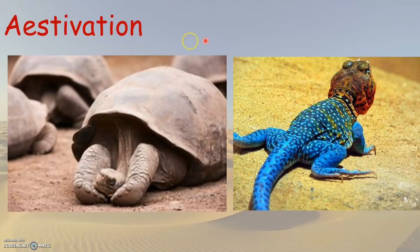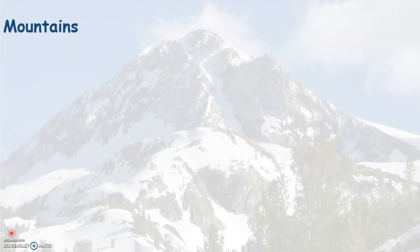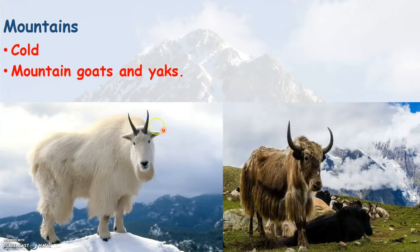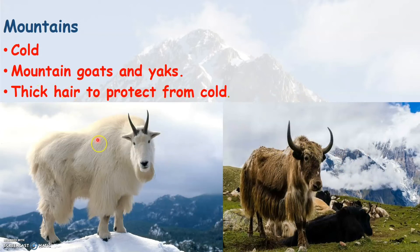This long summer sleep is called estivation. We have now learned about two terrestrial habitats: the plain region and the desert region. We will now learn about the third terrestrial habitat — the mountain region. Mountain regions are cold places. Some of the animals that live in the mountain region are mountain goats and yaks, as you see here. These animals have got thick hair on their body which protects them from the cold. So the special feature adapted by these animals to survive in the mountain region is their thick hair, which protects them from the cold climate.